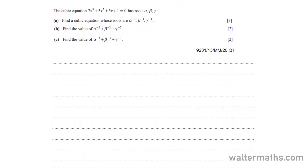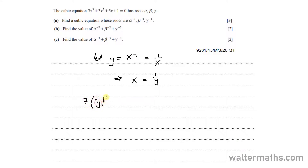The cubic equation 7x cubed plus 3x squared plus 5x plus 1 equal to 0 has roots alpha, beta, gamma. On part A, find a cubic equation whose roots are alpha to the power of minus 1, beta to the power of minus 1, and gamma to the power of minus 1. For this one, I'm going to say let y be equal to x to the power of minus 1, which is the same as 1 over x. We can make x the subject, so x is therefore 1 over y. Substituting 1 over y for x in the original equation gives 7 times 1 over y cubed plus 3 times 1 over y squared plus 5 times 1 over y plus 1 equal to 0.